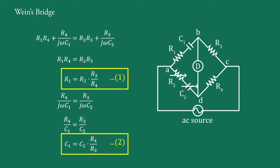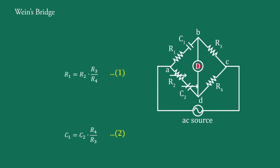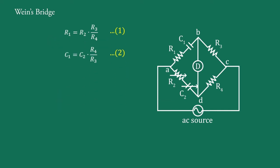Both bridge balance conditions are independent of each other and of frequency. These conditions are satisfied by successive adjustment of C2 and R2, because adjustment of C2 does not affect the first condition and adjustment of R2 does not affect the second condition. When the bridge is balanced, the minimum sound is heard in the headphones or a maximum deflection of the null detector is obtained.